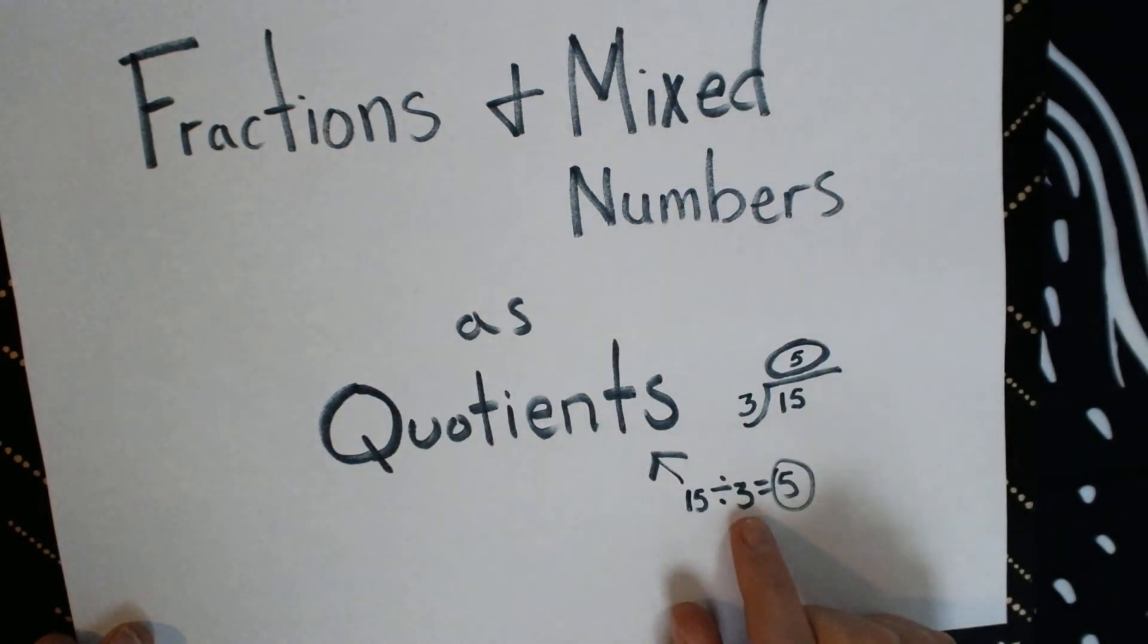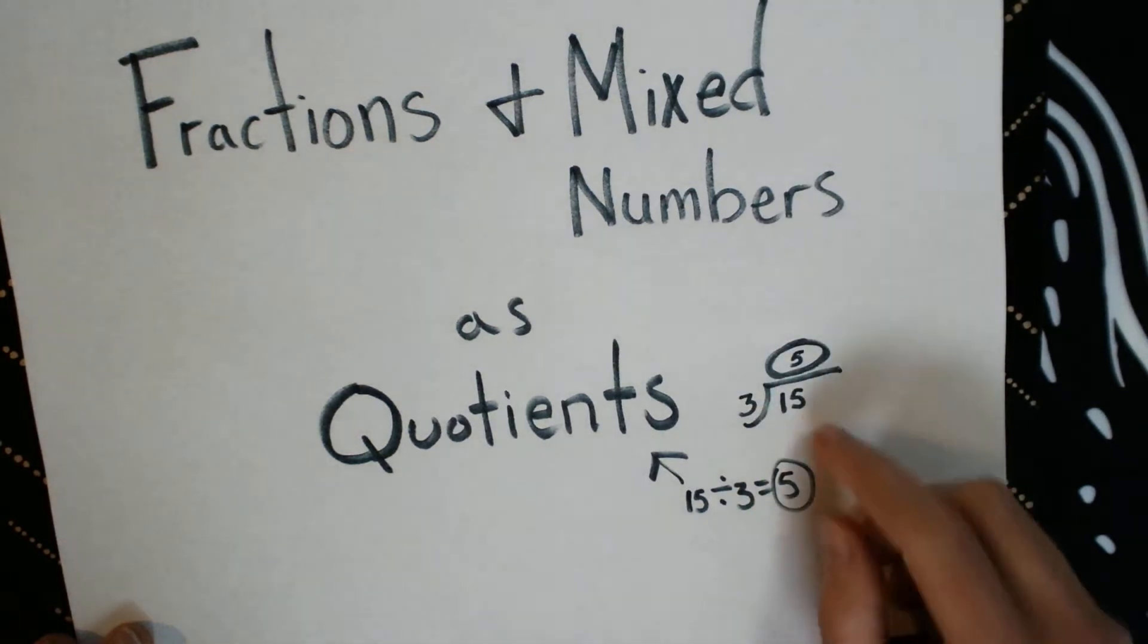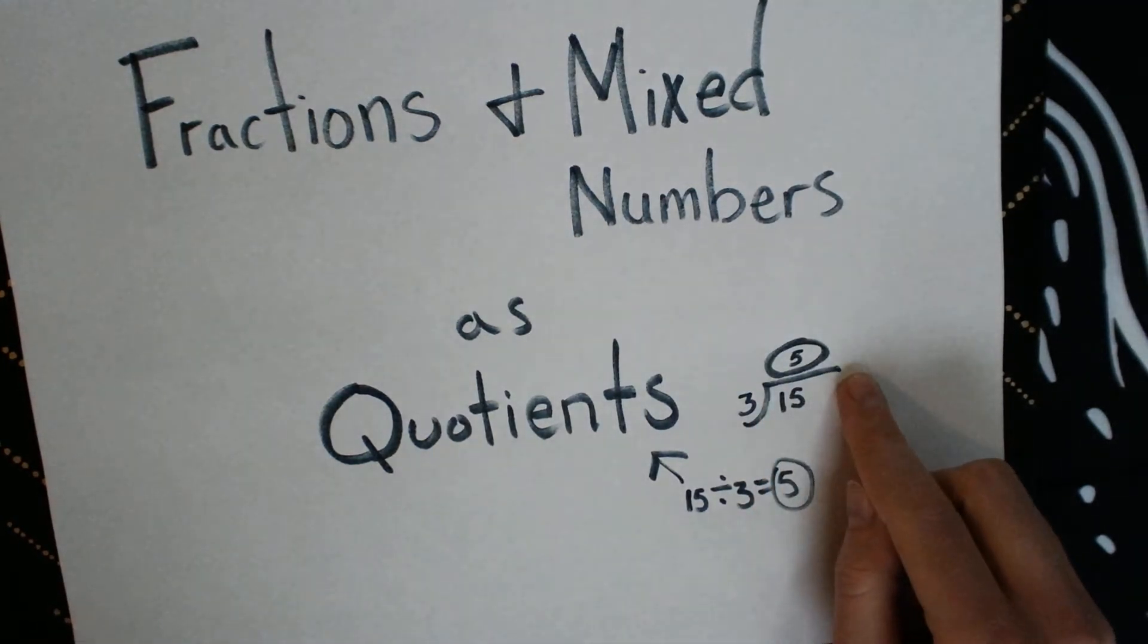If we have 15 divided by 3, our quotient is 5, and this is the representation of how we would write that if we used the division house model.